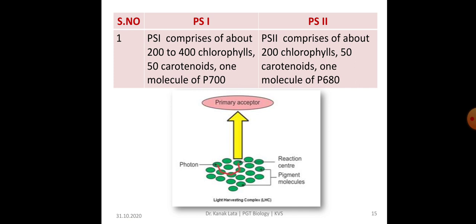PS1 consists of about 200 to 400 chlorophylls, 50 carotenoids and one molecule of P700. Whereas, PS2 consists of about 200 chlorophylls, 50 carotenoids and one molecule of P680. This one molecule of P700 and P680 are the reaction centers.